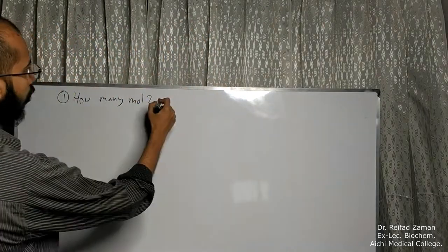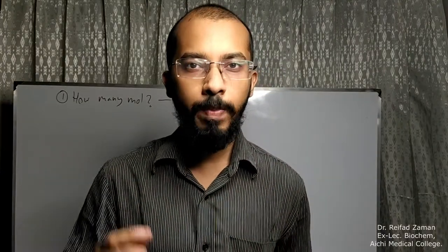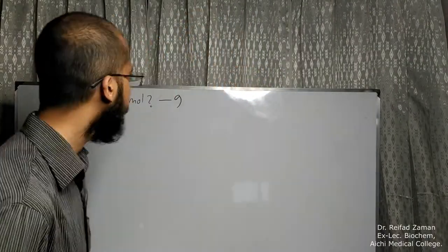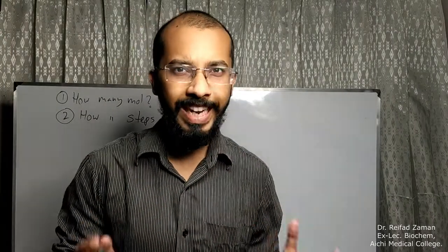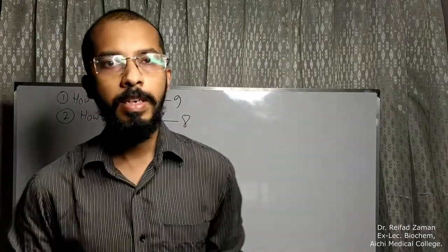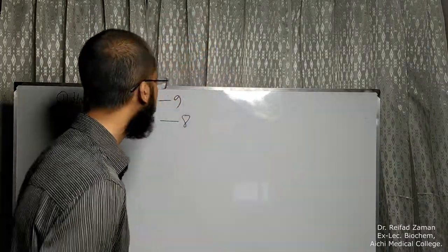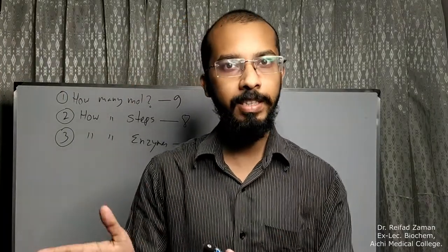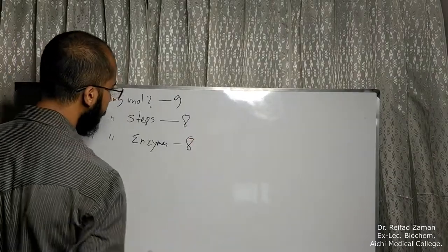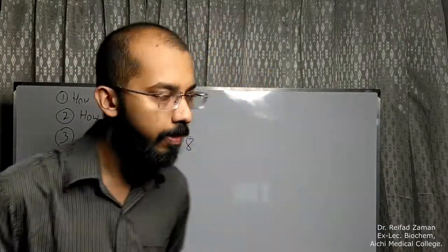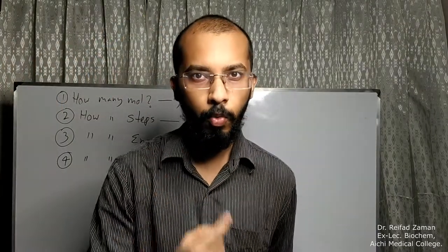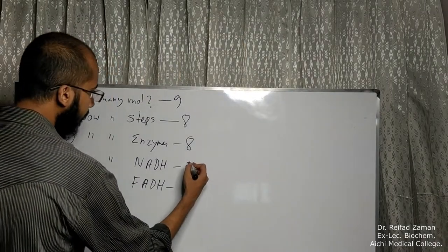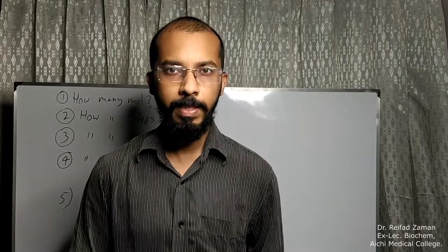The first question we are going to ask is: how many molecules are involved in the Krebs cycle? There are nine major molecules involved, so the answer is nine. Next question: how many steps are involved? There are eight steps. Next: how many enzymes are involved? Since there are eight steps, there must be eight enzymes. Then how many NADH and how many FADH? Three NADH and one FADH. And how many ATP or GTP? Just one.